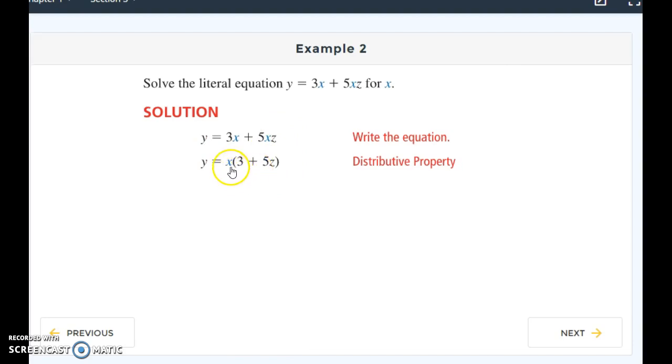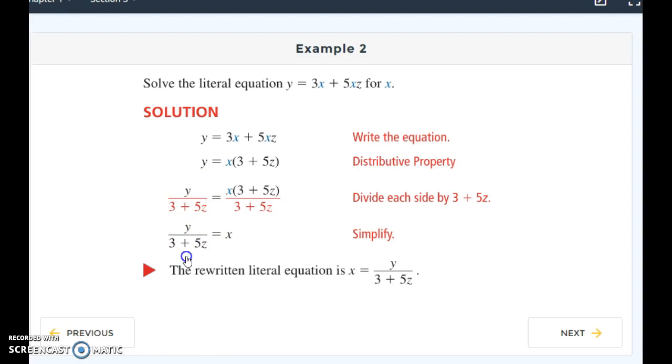So I go ahead and use the distributive property. Then I see that I'm multiplying x times this other thing. So now I know I can go ahead and divide each side by my 3 plus 5z. And I do that, the whole thing. And then I can just simplify. This goes away on the right side. And I know that none of these terms can cancel out or simplify on the left side, so I just write it and leave it like that. So then I rewrite my final answer as just x equals y divided by 3 plus 5z.